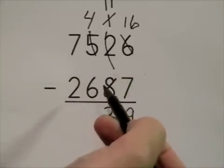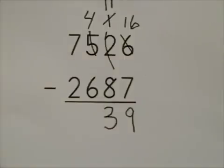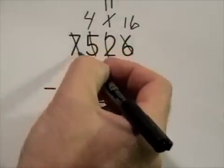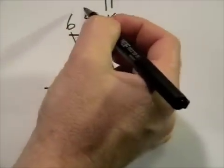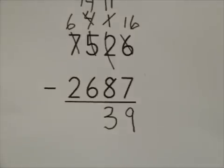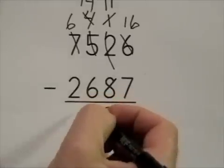Moving to the hundreds column, 6 is larger than 4, so we'll need to regroup again. Make this a 6, make this a 14. And 14 take away 6 is 8.